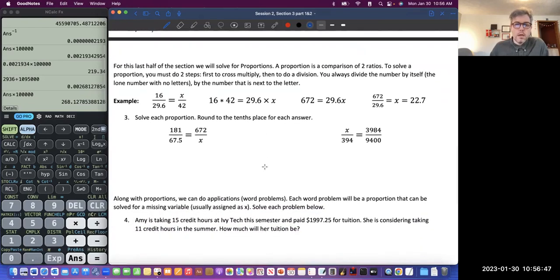All right, let's talk about proportions. With proportions, we're solving, we're kind of setting up a system where something can be proportional to one another. For the last half of the section, section three, we will solve for proportions. A proportion is a comparison of two ratios. To solve a proportion, you must do two steps. First, cross multiply, and then you do division. You always divide the number by itself, the lone number with no numbers, by the number next to the letter.